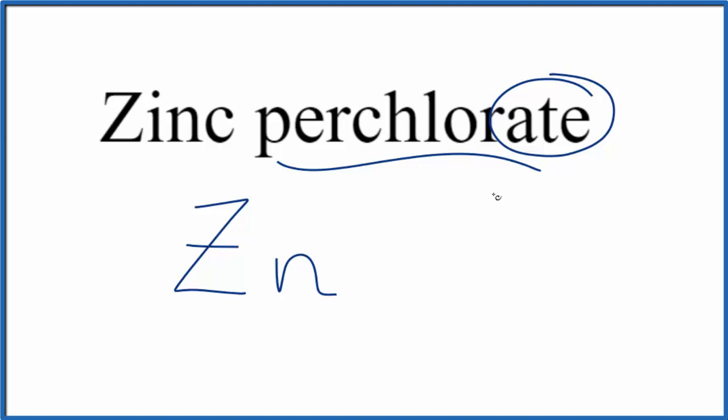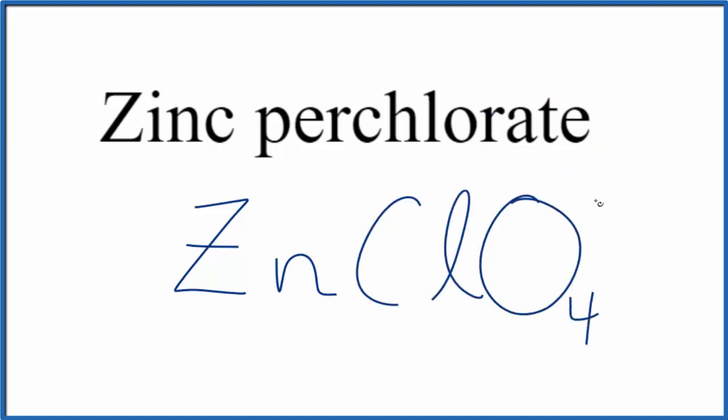You either memorize that the perchlorate ion, that's ClO4 with a 1 minus ionic charge, or if you're allowed, you can look it up on a table of polyatomic ions.